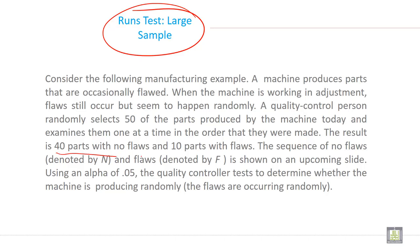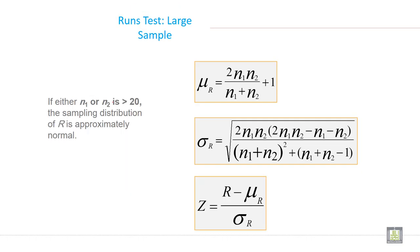A quality control person randomly selects 50 of the parts produced by the machine today and examines them one at a time in the order that they were made. The result is 40 parts with no flaws and 10 parts with flaws.